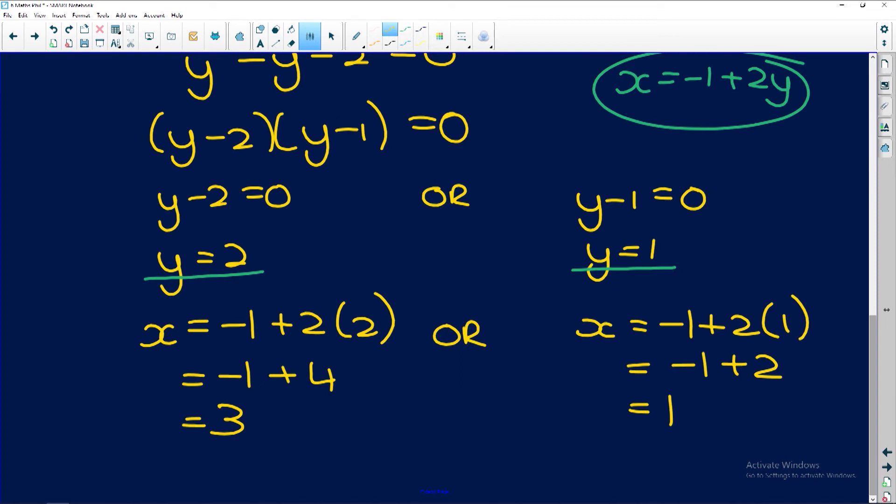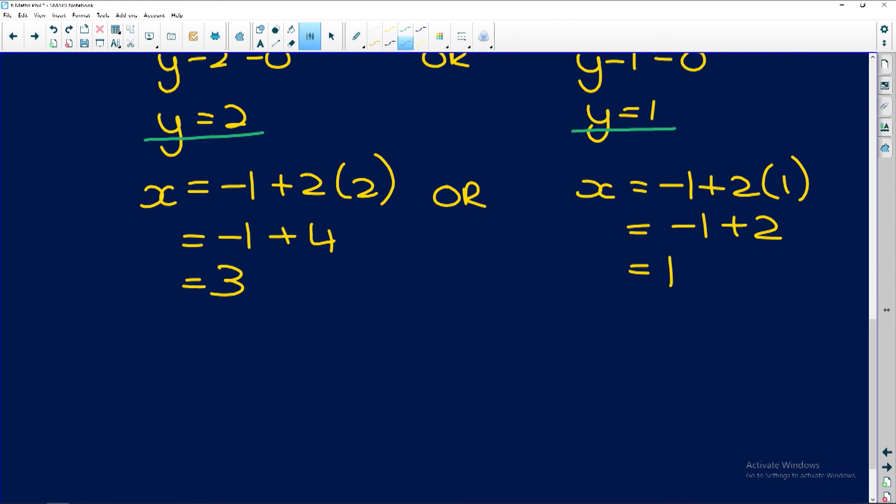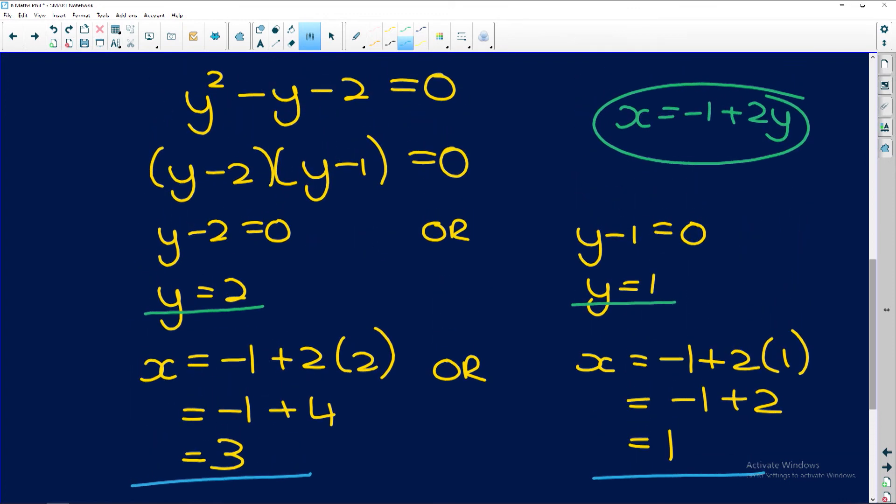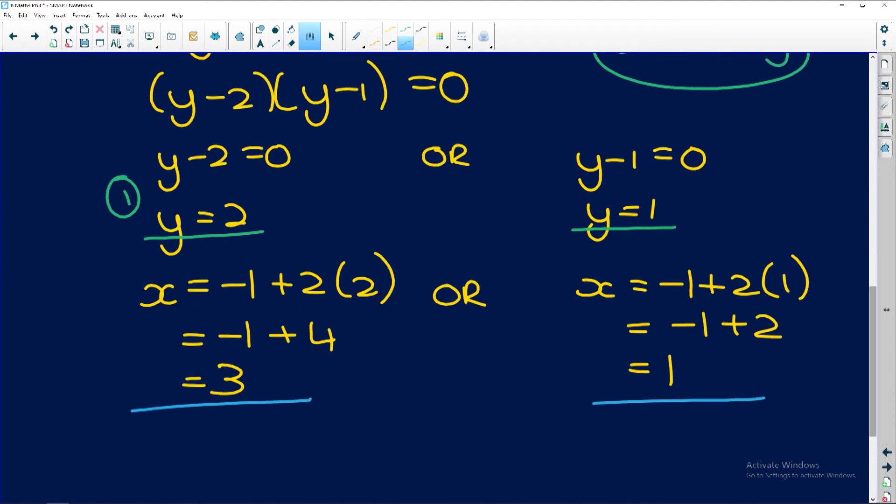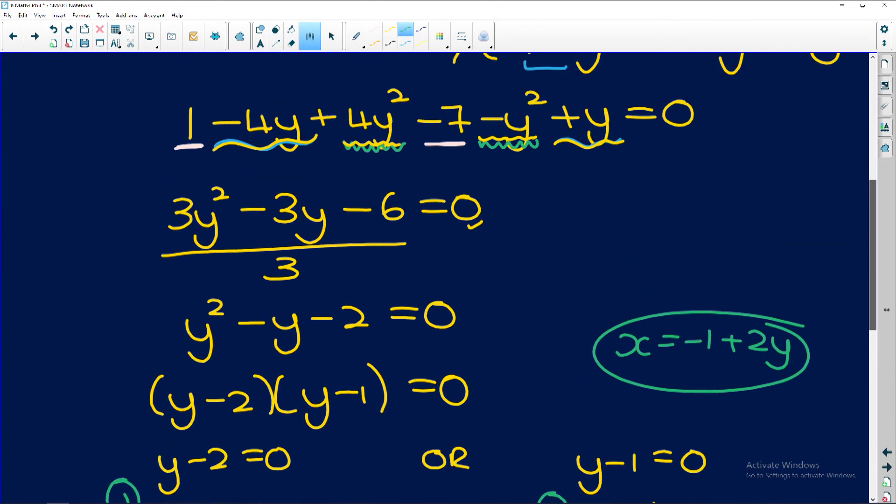Make sure you understand this, guys. Whenever you get this kind of expression, you need to have two x values and two y values. Also, make sure that you write them in their corresponding order. If you find that this is y1, you need to write the corresponding x value underneath it. And this would be x2 and y2. Make sure you write them correspondingly.